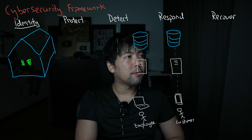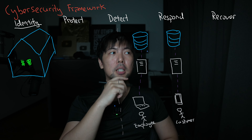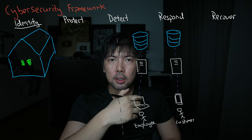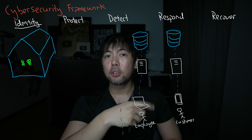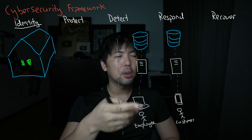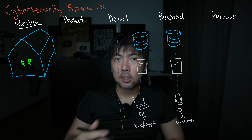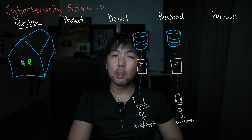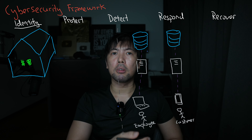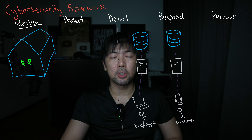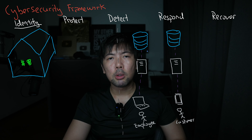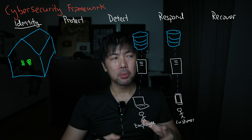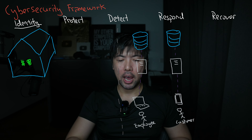Identify is a very important phase — it's about knowing what and where your IT assets are. Using the analogy of your home, your assets could be your cash, valuables, jewelry, TV, mobile devices, and cell phone — all the valuables you would have in your house — and you want to be able to identify them.